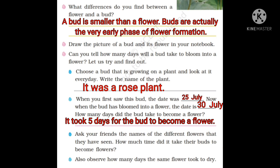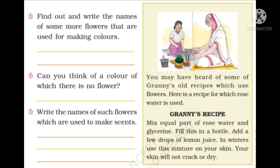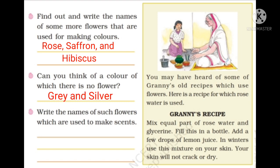In the map of India, the state Uttar Pradesh is marked. In Uttar Pradesh, there is one district named Kannauj. Kannauj is a district in the state of Uttar Pradesh, and you can see the Kannauj district in the map of Uttar Pradesh.